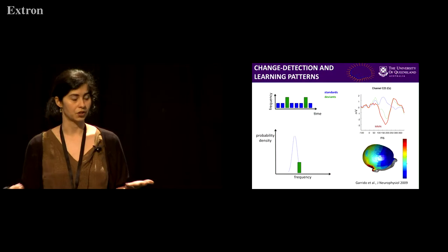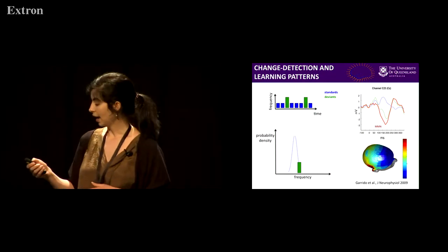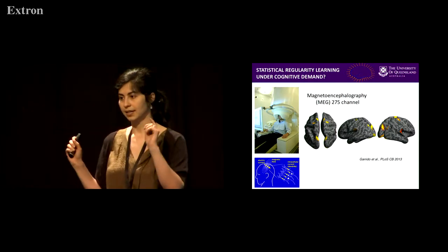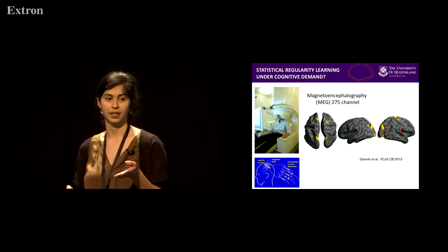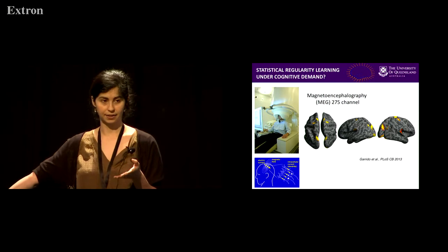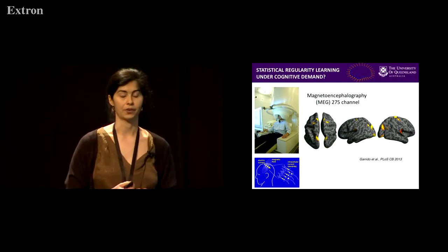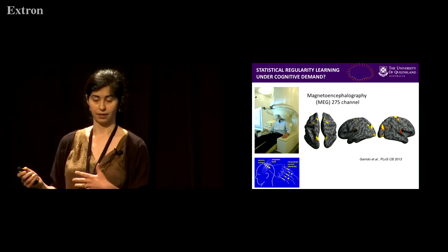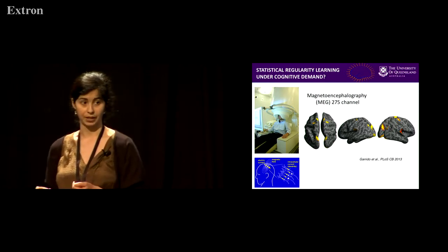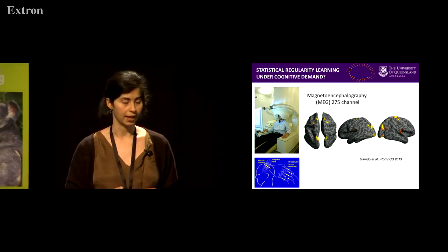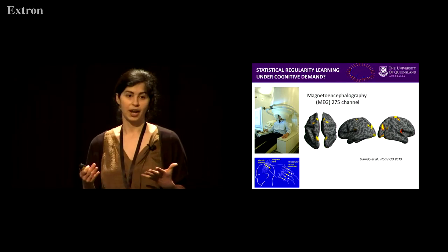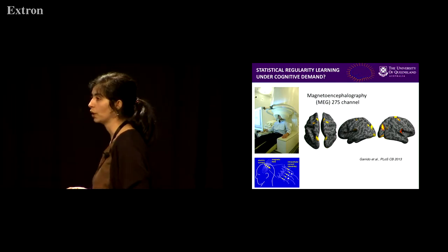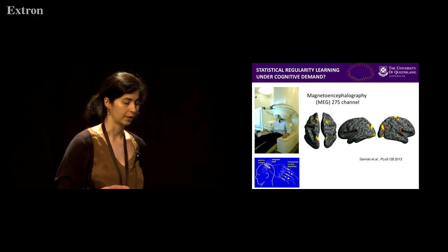Indeed, when we measure with MEG and compare sounds that coincide with the mean of this Gaussian and sounds that are in the tails of this distribution, we see a prediction error response. Here I'm showing you the results of the study we did with magnetoencephalography when I was at UCL, and we see that these prediction errors are distributed over a network of areas including secondary auditory cortex and intraparietal cortex.